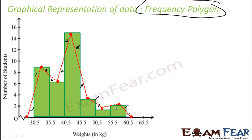So it should be like this — this area will be equal to this area. This is done just to make sure that the area under the frequency polygon is the same as the area of the histogram.